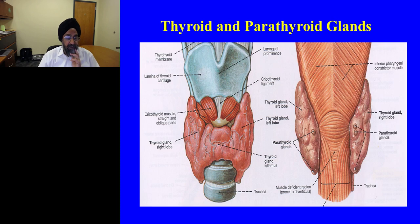This slide reminds us that the parathyroid gland is embedded in the thyroid tissue itself. These are ready-to-be-transplanted glands, and surgeons performing parathyroidectomy are able to locate them using radiology techniques and are able to cure the patient. These are the glands which create the parathyroid hormone.